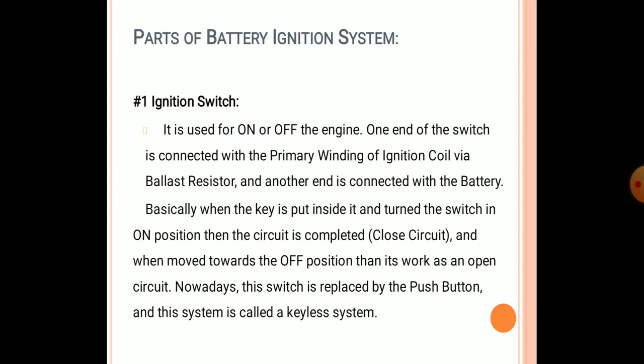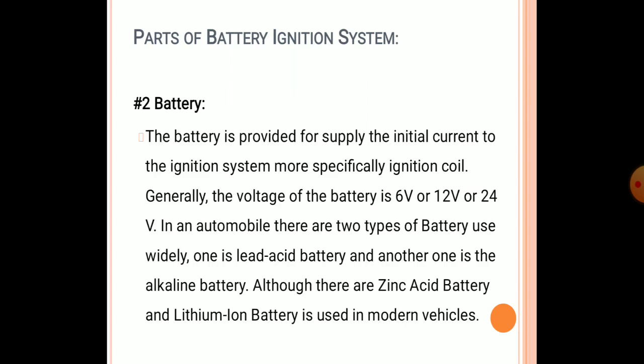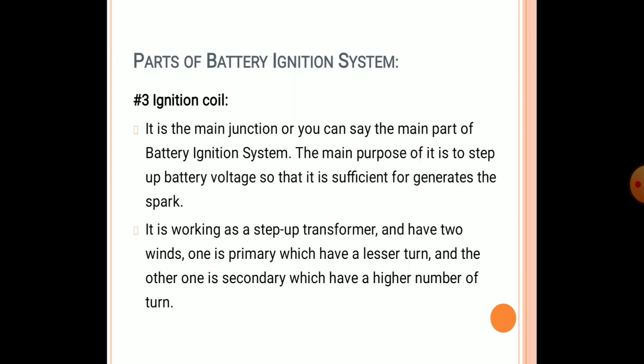Another part is the battery, which provides supply current to the ignition system, more specifically to the ignition coil. The voltage of the battery is around 6 to 12 volts, and for four-wheelers or heavy vehicles it can be up to 24 volts. In automobiles, two types of batteries are widely used: lead acid battery and alkaline battery. Zinc acid battery and lithium ion battery are also used in modern vehicles.